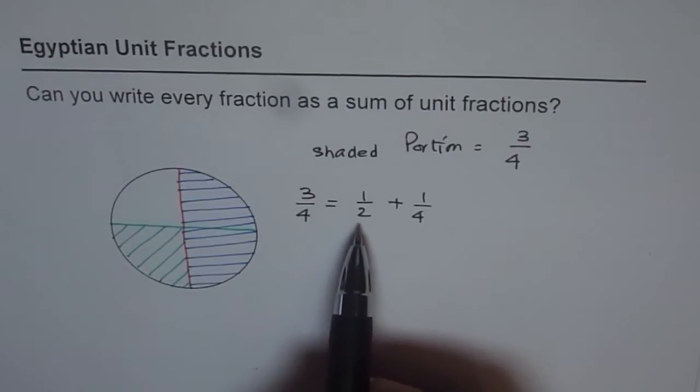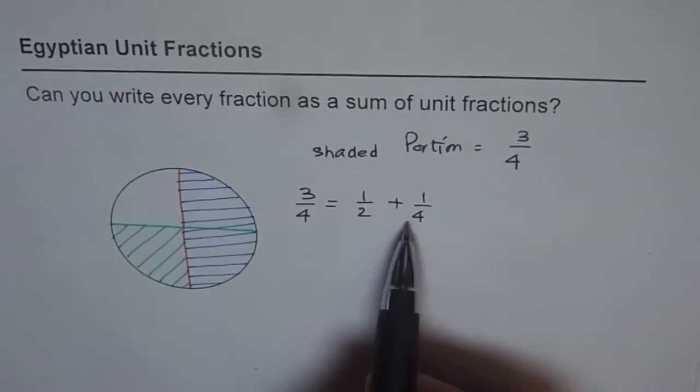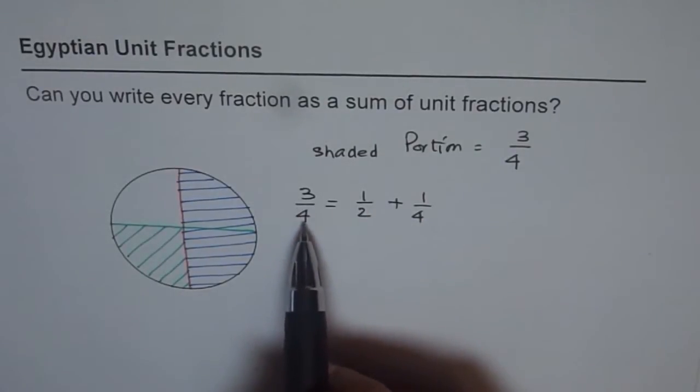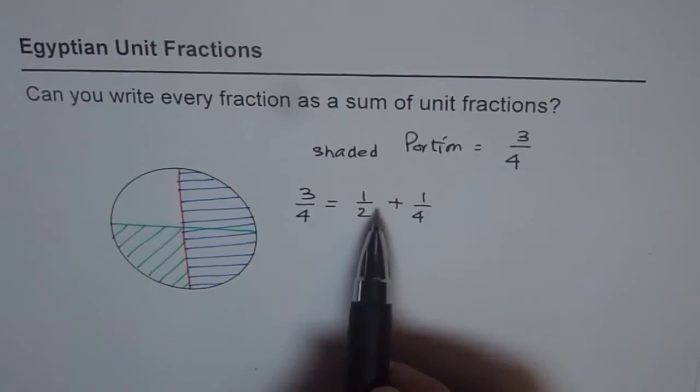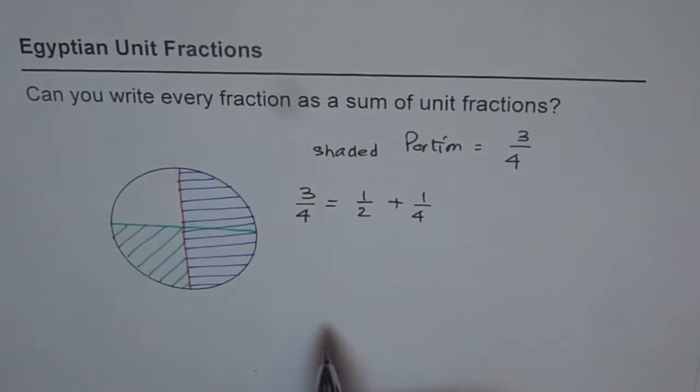The interesting thing which I observe here is that we have one on top of both. So these are called unit fractions. So three-fourths can be written as combination of one-over-two plus one-over-four.